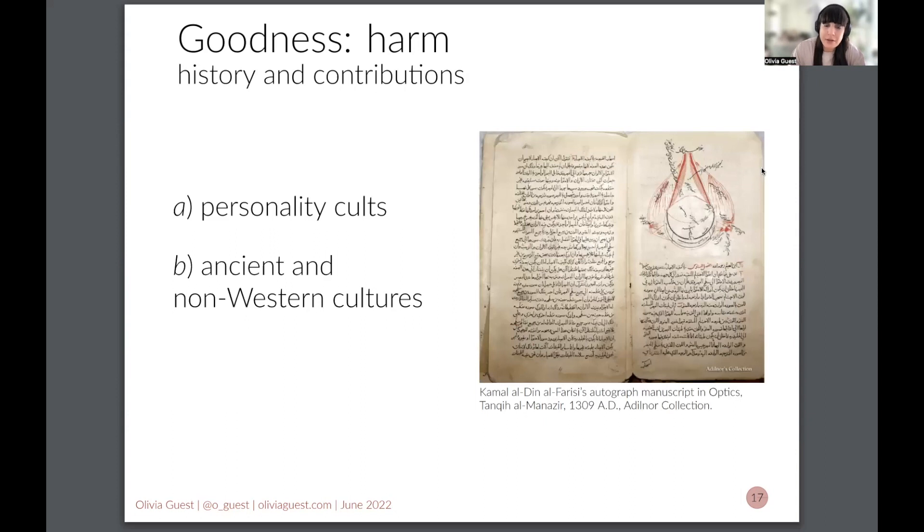We also need to refer to our ancestors and our other fellow humans. So ancient and non-western cultures need to be included when we talk about our theory's history or our theories in the present where we have people contributing to them from outside the global north. This figure shows a manuscript in Islamic science describing the relationship between the eyeball and the brain.